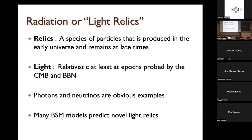Relics means a species of particles that is produced in the early universe and remains at late times, maybe until today. Light means this species is relativistic at epochs probed by the CMB and BBN — they can be non-relativistic today. Photons and neutrinos are the obvious examples from the standard model, and many BSM models predict novel light relics, often called dark radiation.